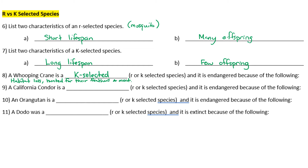Number nine: a California condor is a K-selected species and is endangered because of habitat loss and poisoning from bullets left behind by hunters.